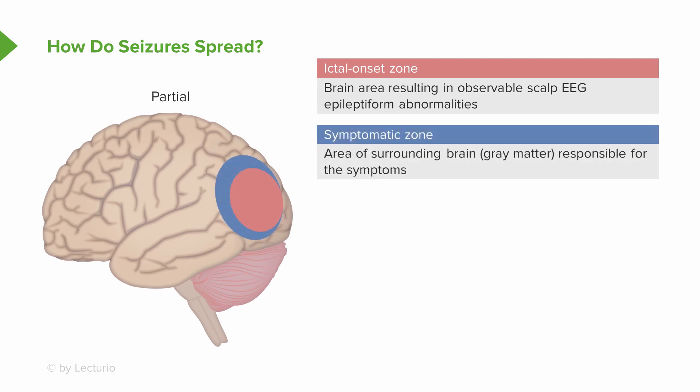This is surrounded by a symptomatic zone — the area of brain surrounding the ictal onset zone. This is typically gray matter that's responsible for the symptoms the patient has at the onset of the seizure. That symptomatic zone is often the zone that contributes to aura formation.